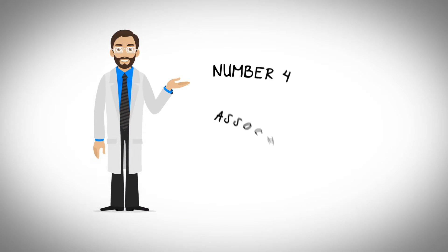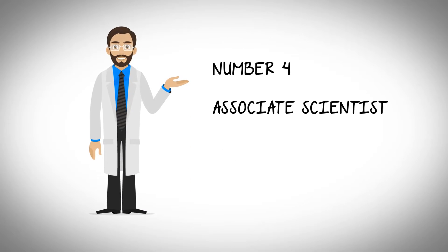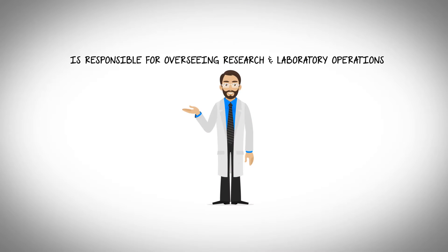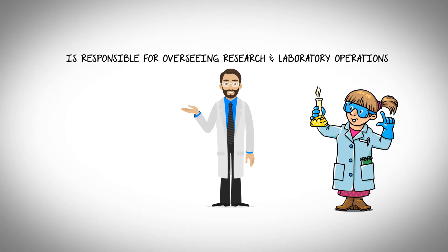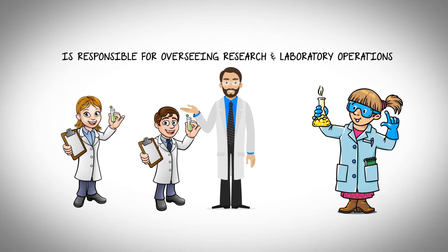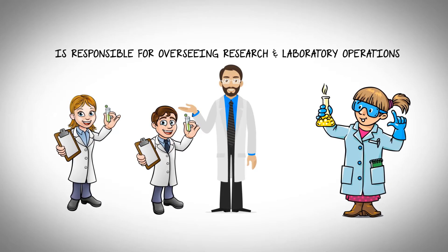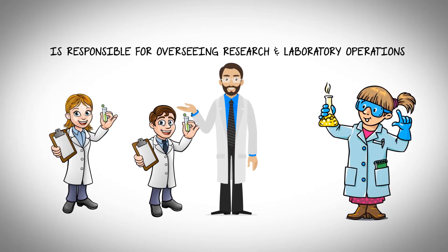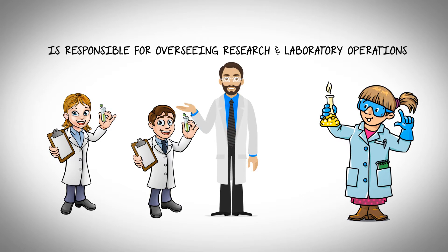Number four: Associate Scientist. The associate scientist performs in close coordination with the junior level research associates and is responsible for overseeing research and laboratory operations within the department. The job responsibilities, educational requirement, and average salary are as follows.